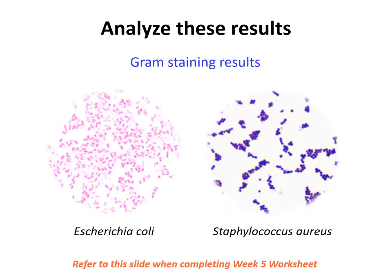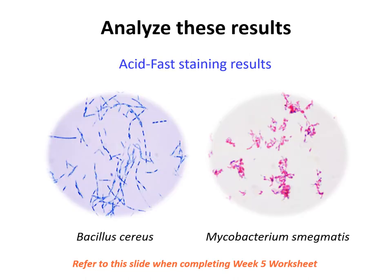Here are some images to look at. You have Escherichia coli and Staphylococcus aureus — based on the results, can you tell which one is gram positive and which is gram negative? You'll have some questions to answer on the worksheet. There are also results shown for the acid fast stain with Mycobacterium and Bacillus — look at the images and determine which one is acid fast and which is non-acid fast to help answer questions on your worksheet.